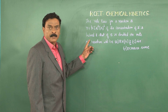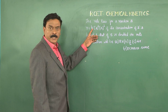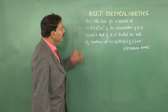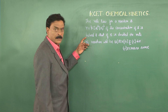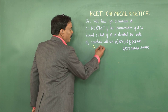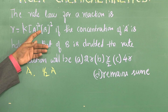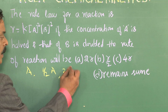This is a reaction in which the rate is second order with respect to A and second order with respect to B. Initially, let us say the concentrations of A and B were X and Y. If the concentration of A is halved, it was A initially and now it is half A. And for B, initially it was B, now it is doubled — the concentration becomes 2B.